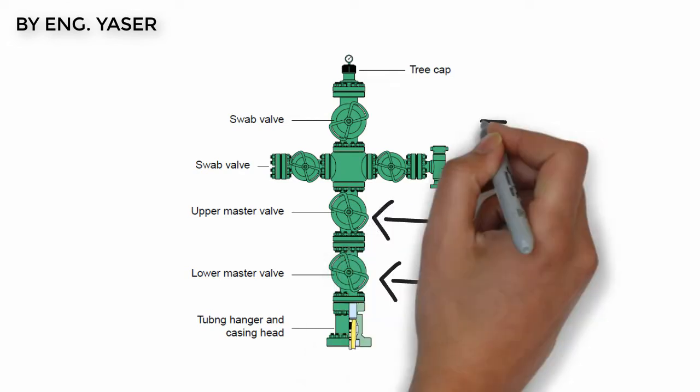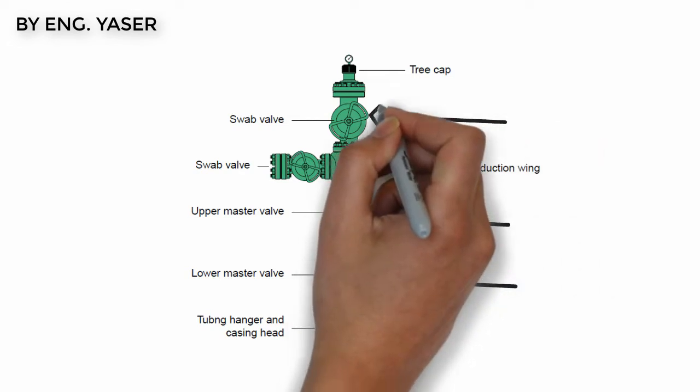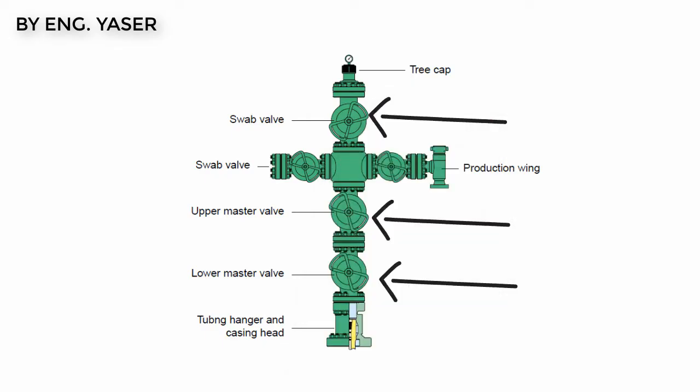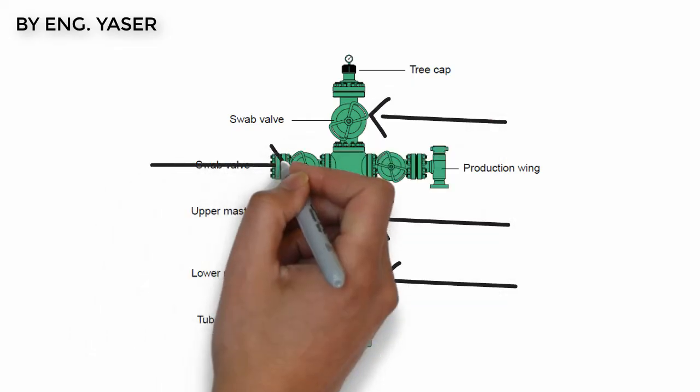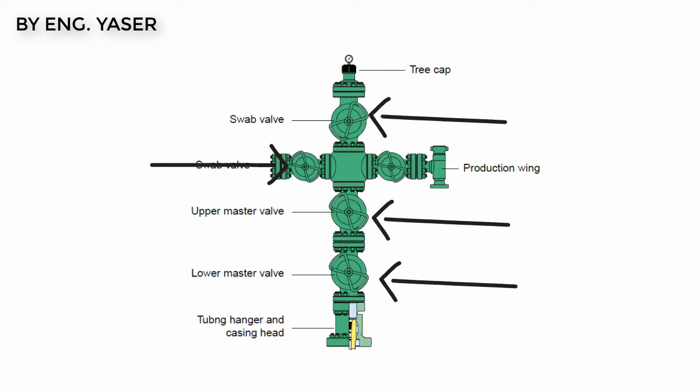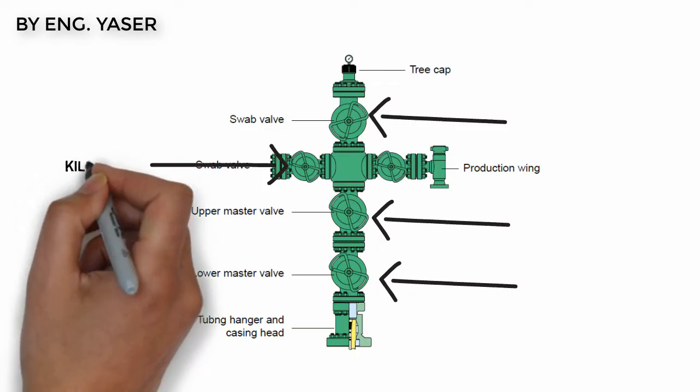Valves of Christmas tree: Lower and upper master valves are used to isolate the well. We have two valves so in case of one valve failure we have a backup one.